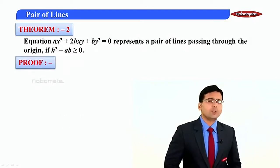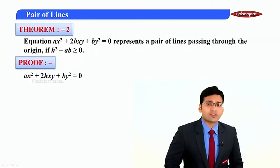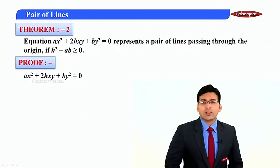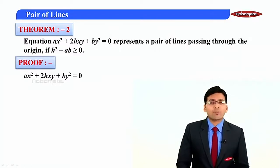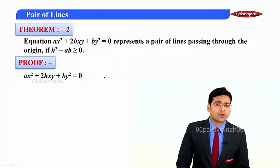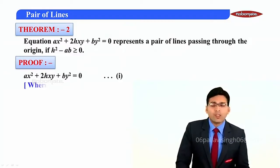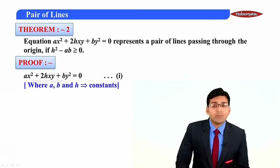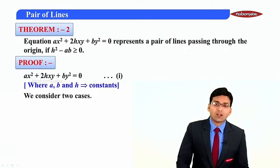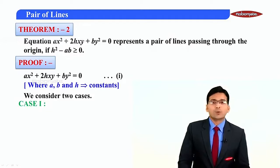We do the proof in cases. Consider the equation ax² + 2hxy + by² = 0 — let us call it equation number 1, where a, b, h are constants. We consider two cases.